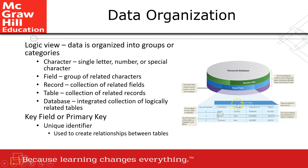A record is a collection of related fields. For example, record number one belongs to Becker, Cecilia; record number two belongs to Brown, Sam; and record number three belongs to Coleman, Alex. A table is a collection of related records. The whole thing shown here is called a payroll table.